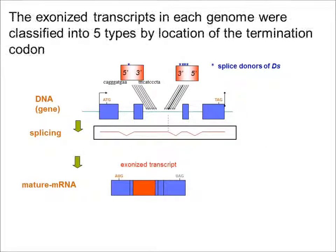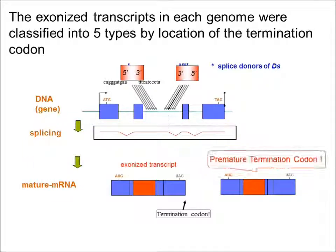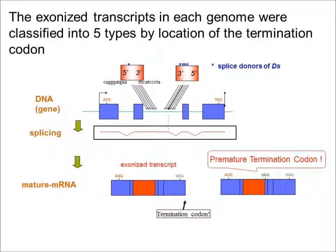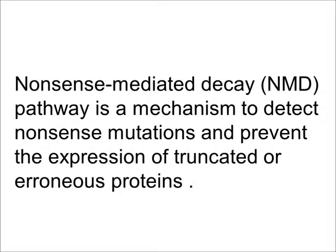To begin with, the exonized transcripts in each genome were classified into five types by location of the termination codon. Up to 71% of the total exonized transcripts were putative targets for the nonsense-mediated decay, NMD, pathway — a mechanism to detect nonsense mutations and prevent the expression of truncated or erroneous proteins.